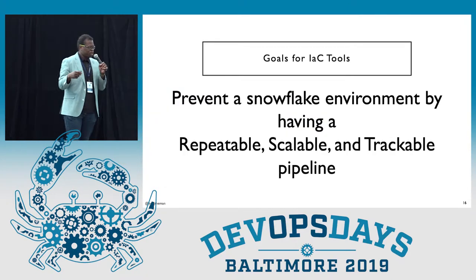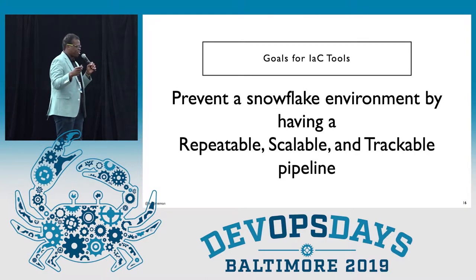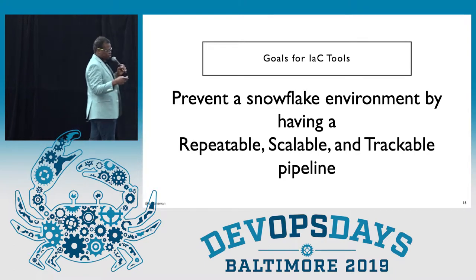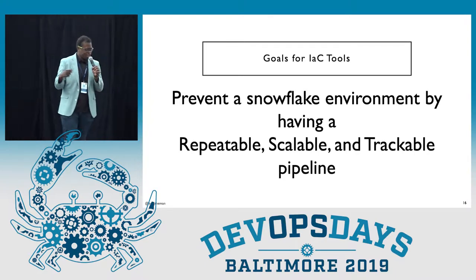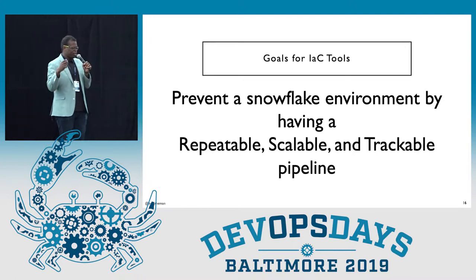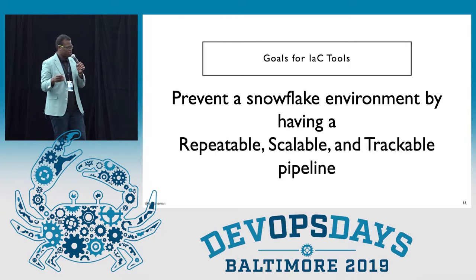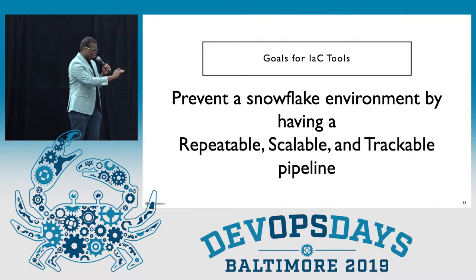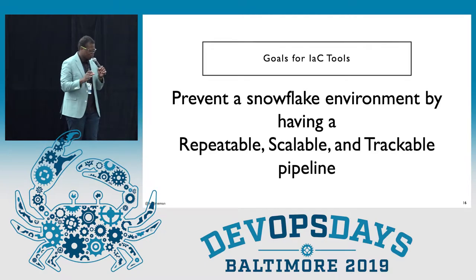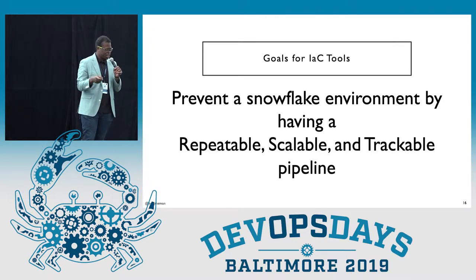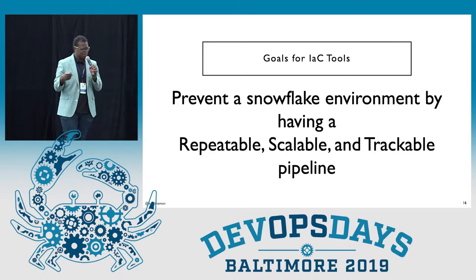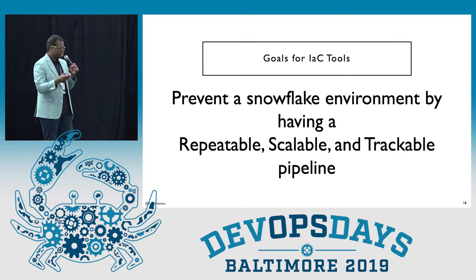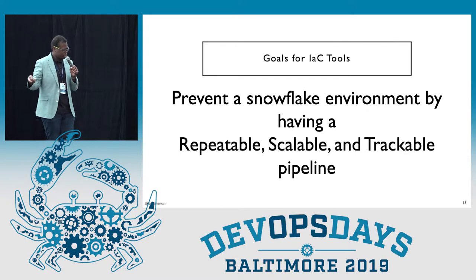The goal of a lot of these tools is to prevent a snowflake environment by having a repeatable, scalable, and trackable pipeline. When I say snowflake environment, I mean an environment you get to that you don't know how it got there — it's so unique you don't want to destroy it because it's your special snowflake and it can't be reproduced. We don't want that situation when we're developing machine learning products, because it could be a critical system. So it's very important to track how the machine learning models got into production.